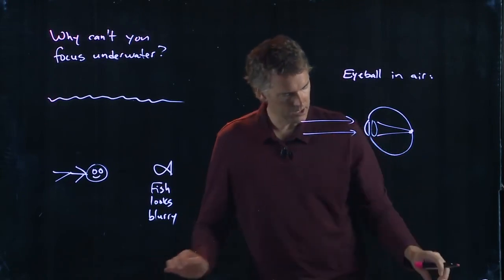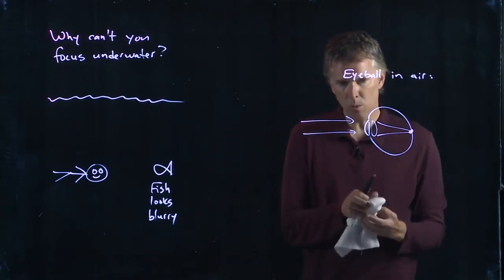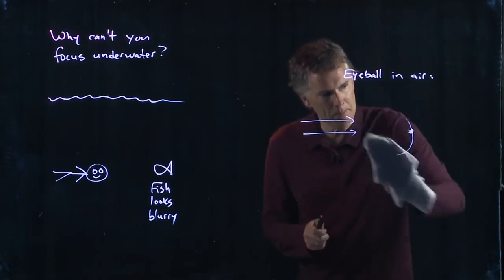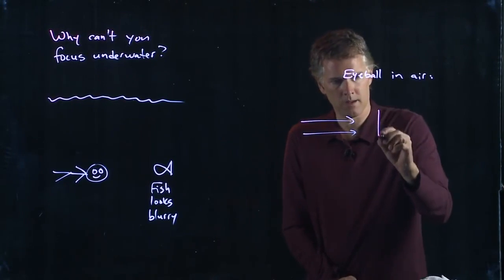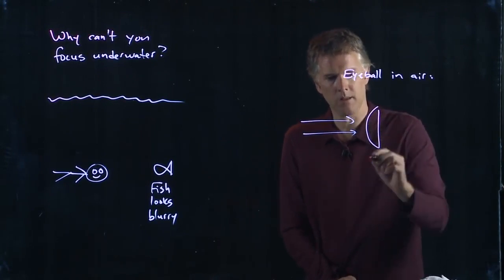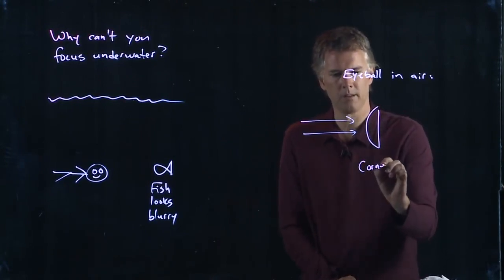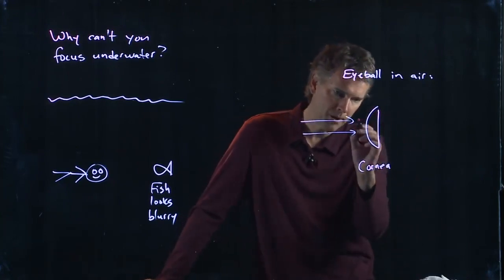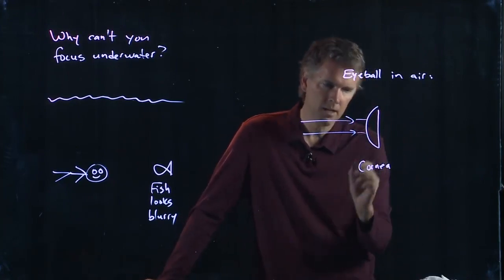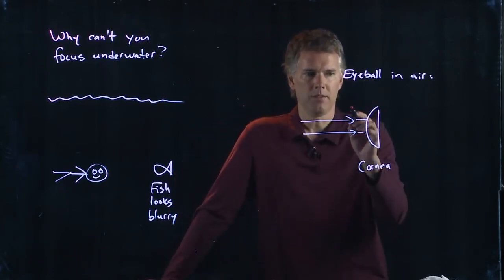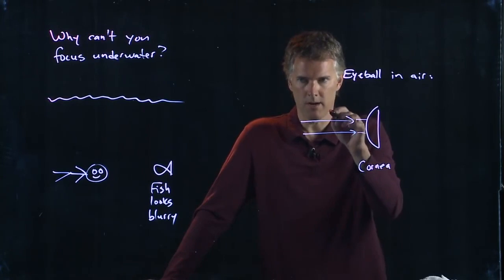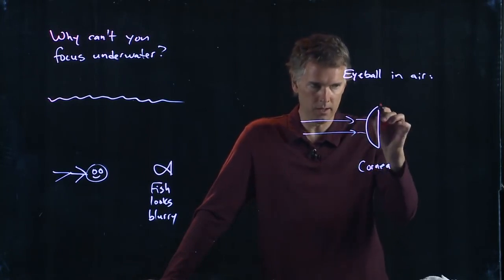Let's draw it in a little more detail to see what happens in this bending at the cornea. This is the cornea of your eyeball. And when this parallel ray comes in, it's going to hit this first interface. This is air out here. This is your cornea. There's the rest of your eyeball.